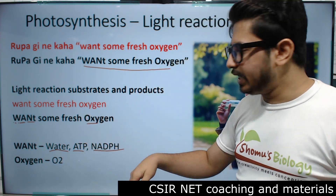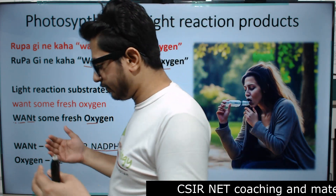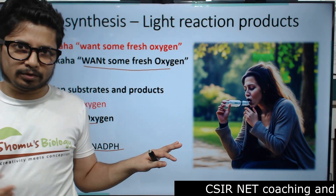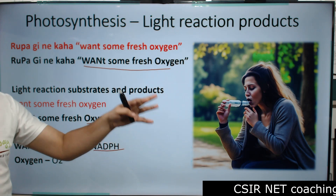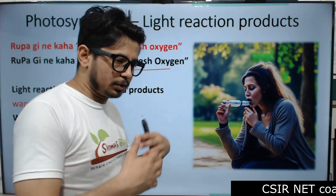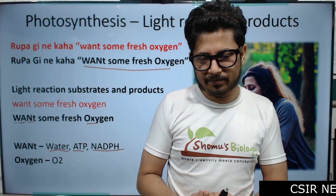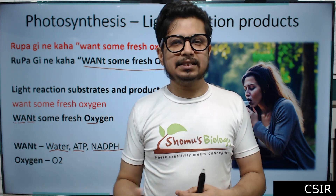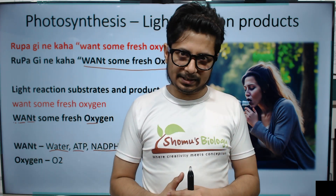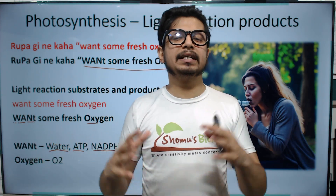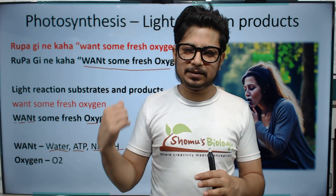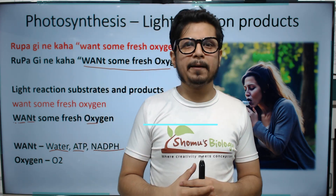NADPH will be utilized in the Calvin cycle to complete the process of photosynthesis. That's the overall idea about photosynthesis. I believe you now have a clear understanding of photosynthesis with the help of this mnemonic.